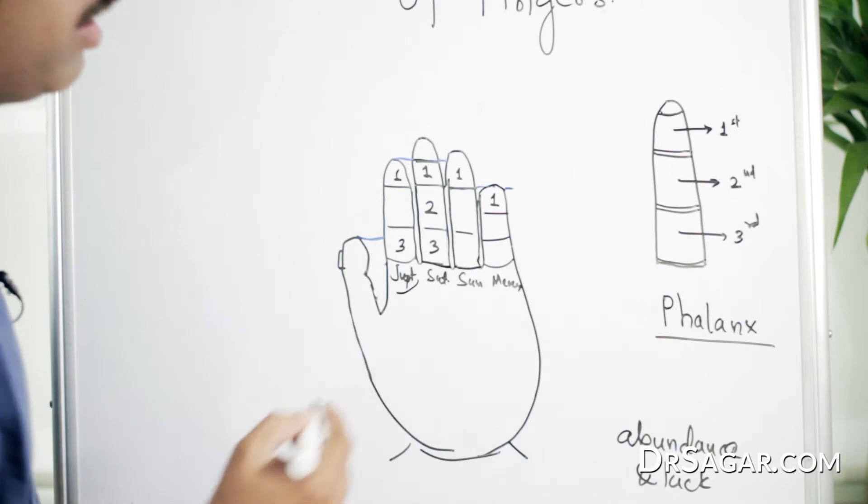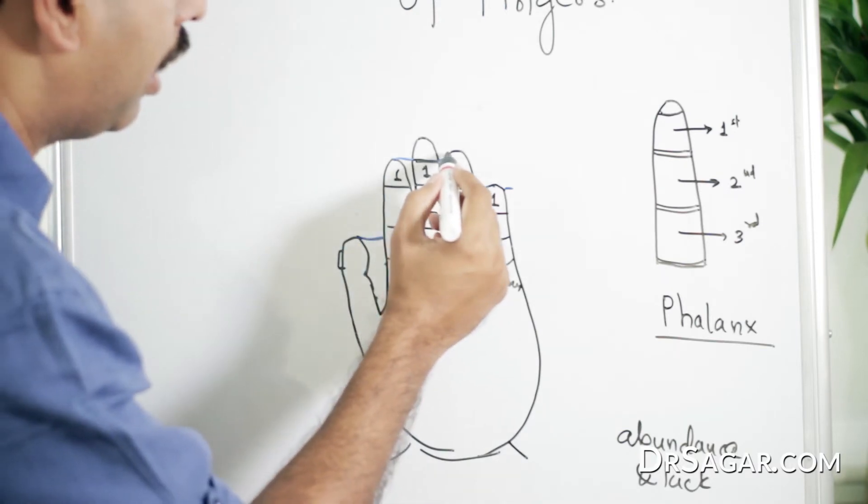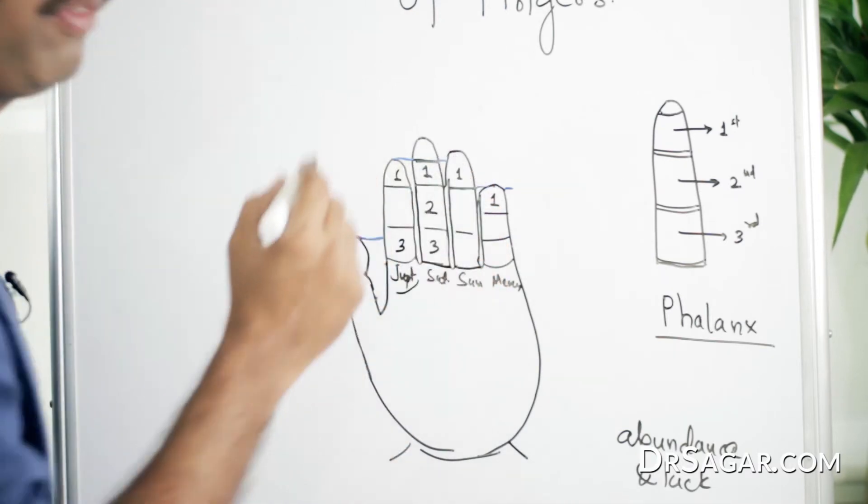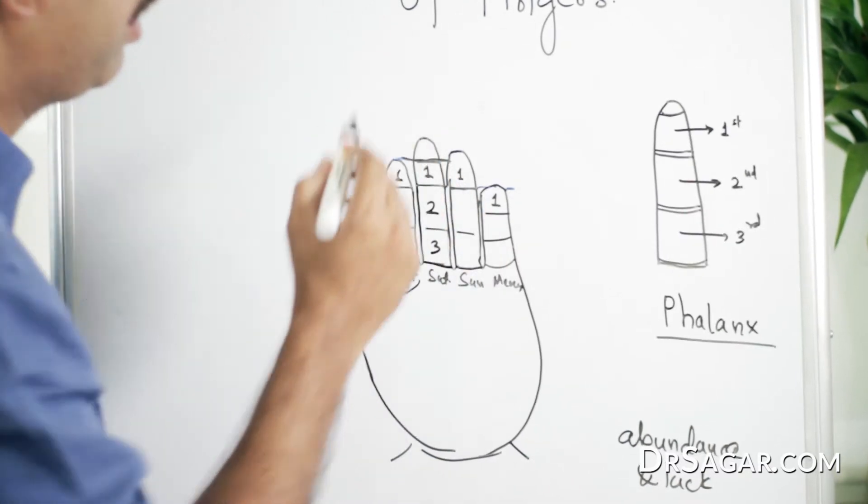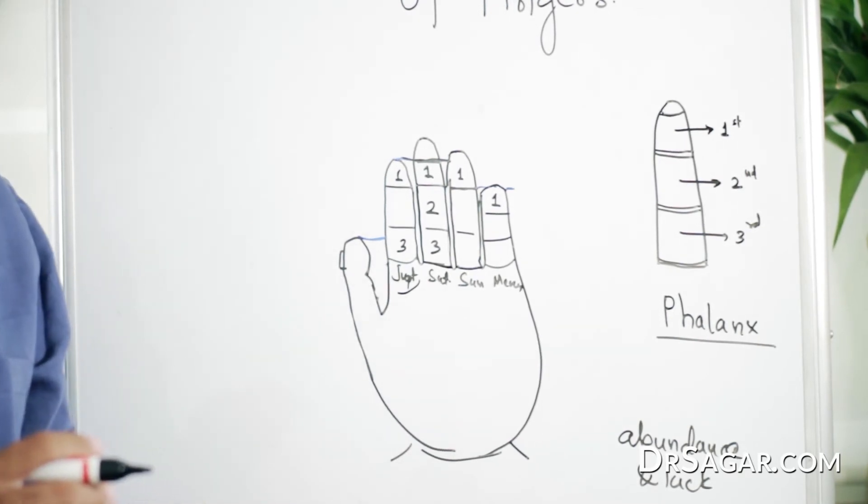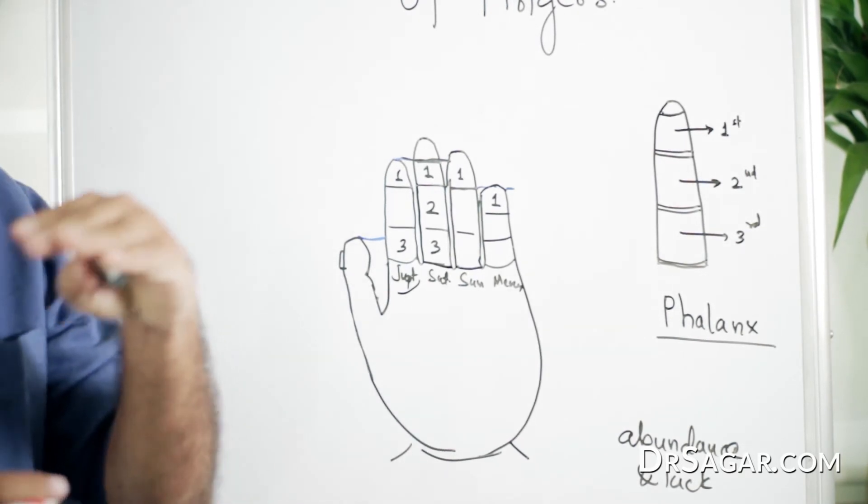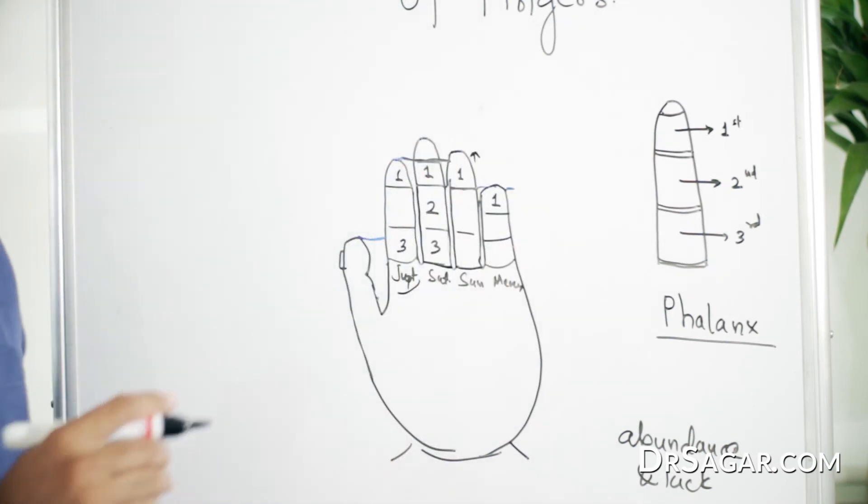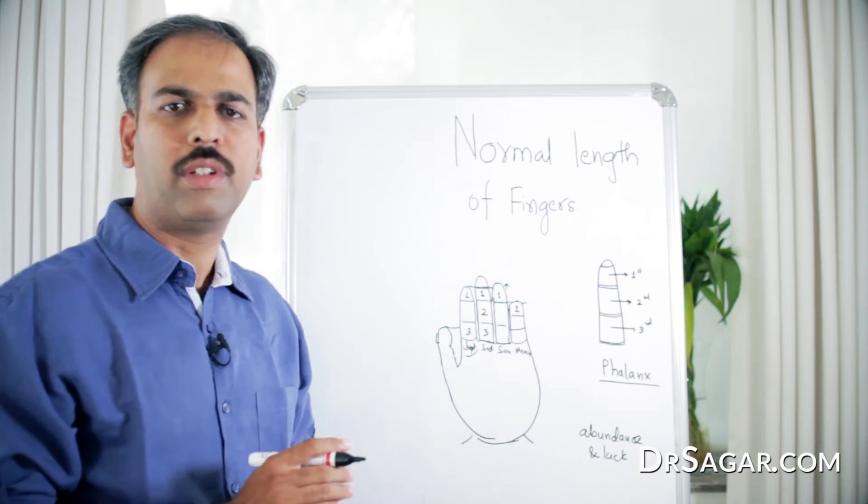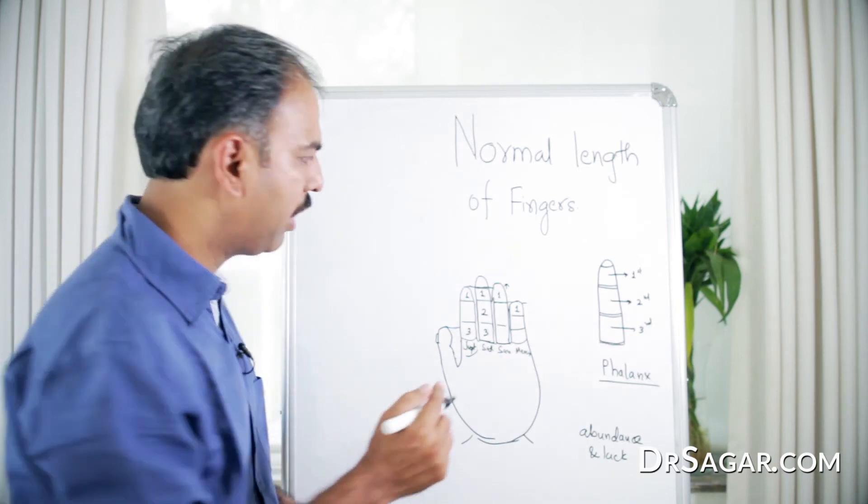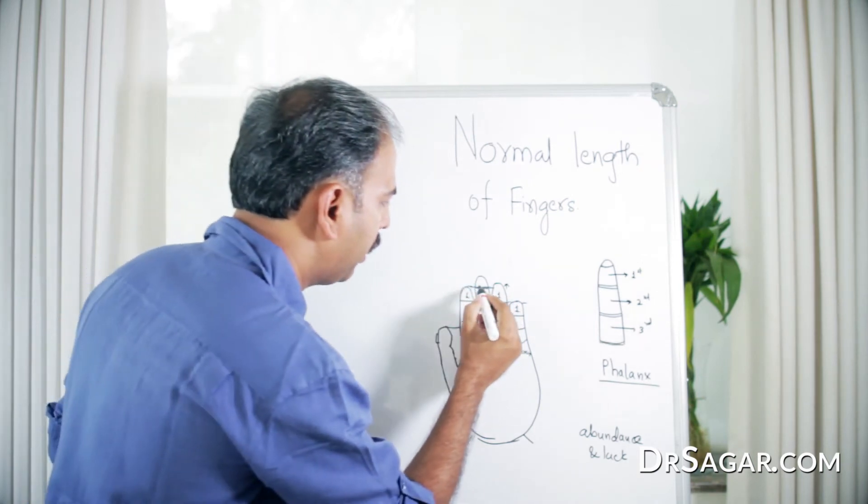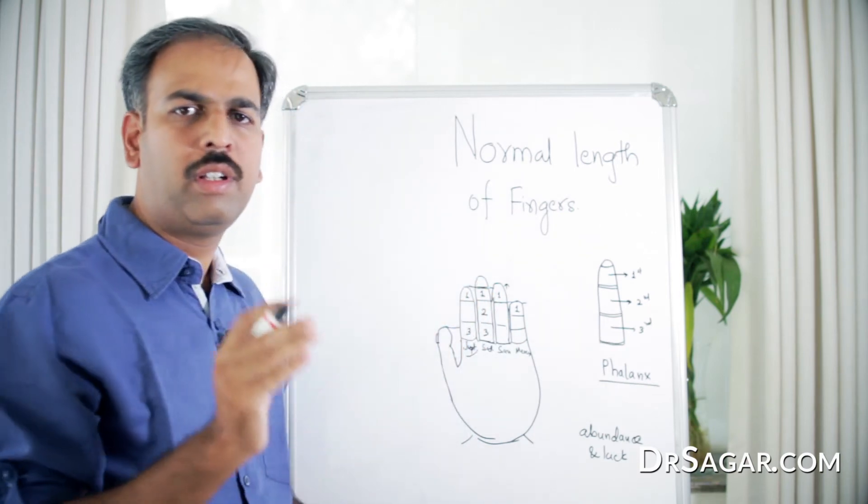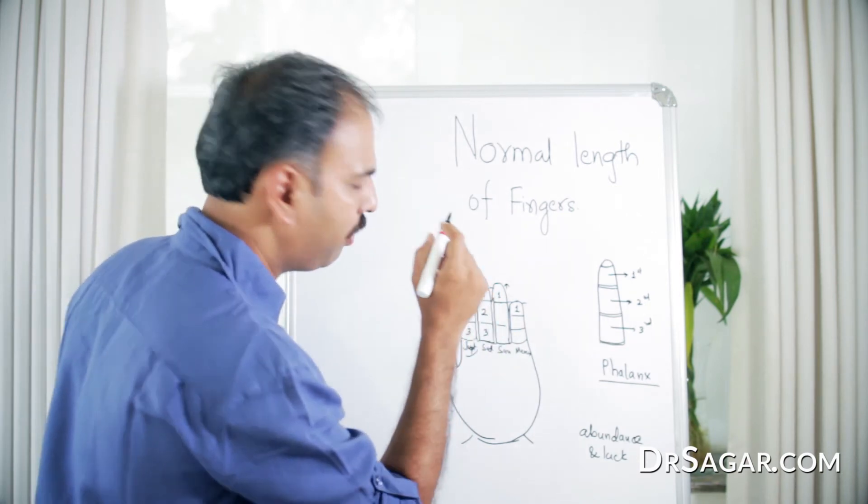For the ring finger, the tip of the ring finger should reach the middle of the upper phalanx of the middle finger, or it can go slightly upper. This is the scale for the normal length of the ring finger. Again I'll repeat, the tip of the ring finger should be slightly above the middle of the middle finger.